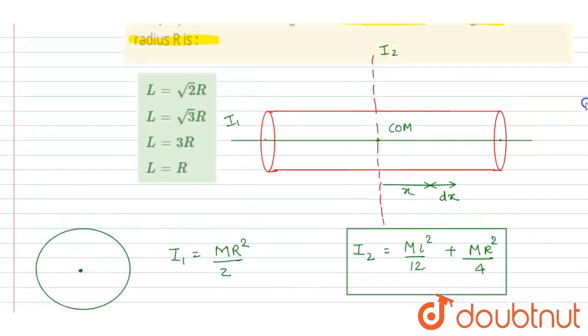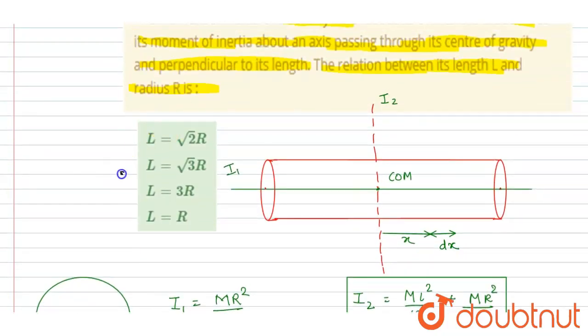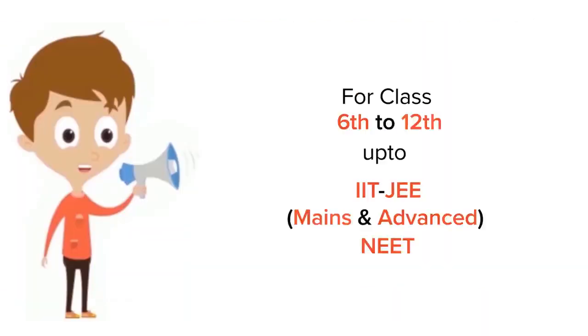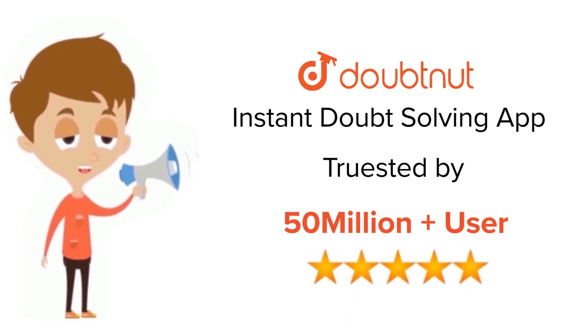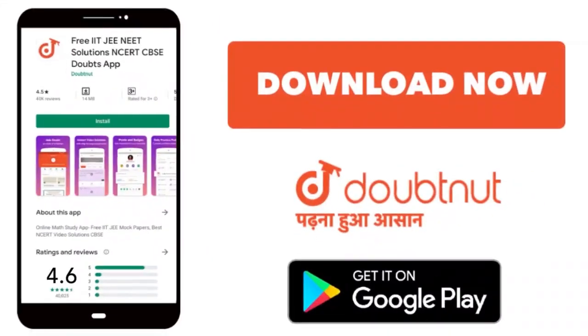Checking the options, L = R√3 is the correct one, so B is the correct answer. Thank you. For class 6-12, IIT-JEE and NEET level, trusted by more than 5 crore students, download Doubtnut app today.